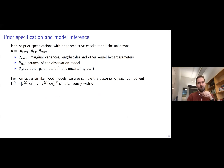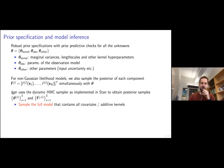We define robust priors for all unknowns in the model including kernel parameters, all parameters of the observation model, and other parameters. For non-Gaussian likelihood models, we also sample the posterior of each component of the additive model. Sampling is done using the dynamic Hamiltonian Monte Carlo sampler in Stan. We sample the full model where all covariates and additive components are included.